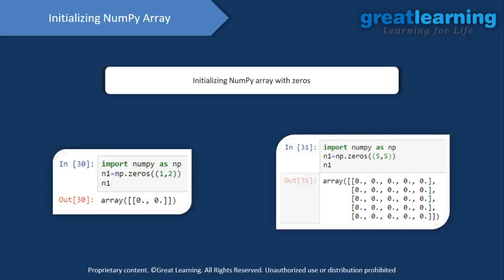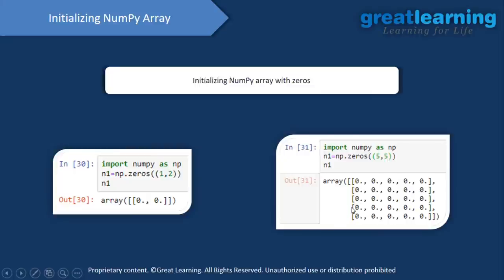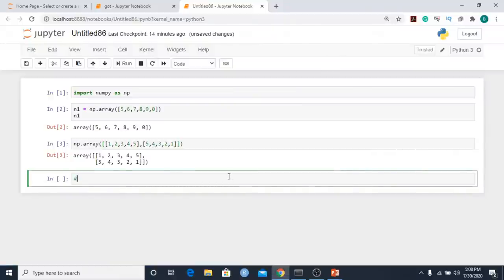If we want to create a NumPy array initialized with zeros, we use np.zeros. I pass in the dimensions — for example, one comma two means one row and two columns, and all values equal zero. Similarly, if I pass in five comma five, I get a 5×5 NumPy array where all values are zeros.